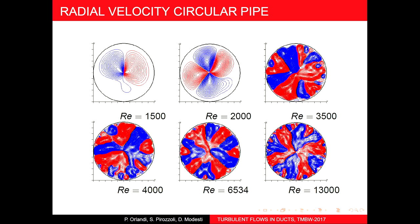Looking at the laminar-to-turbulent transition, here we have the radial velocity for a circular pipe. Going from Reynolds 1500 to Reynolds 2000, v increases. The structure visible here is very large, so it cannot move, and therefore turbulence cannot grow.